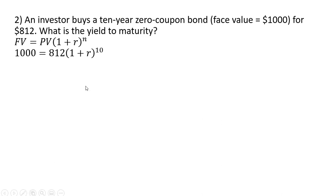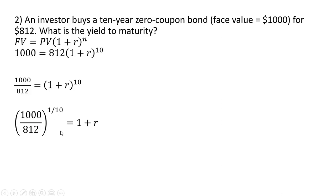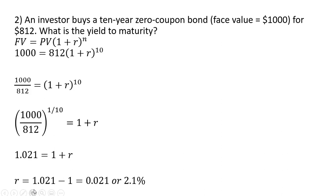Plugging all our known values in, and then dividing through by 812. We want to get R by itself, so we're going to raise both sides of the equation to the reciprocal of 10, or 1 over 10. That leaves us with 1.021 on the left-hand side. Then we subtract 1 from it, and we get a yield to maturity or real interest rate of 2.1%.